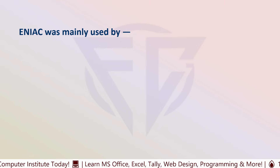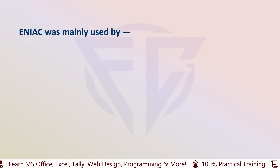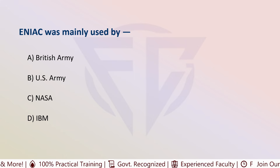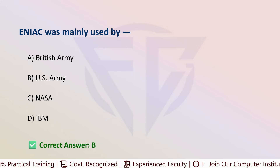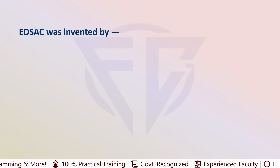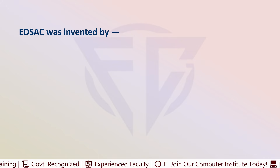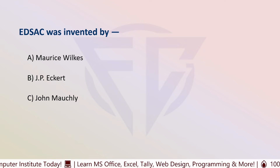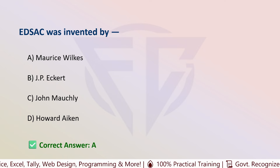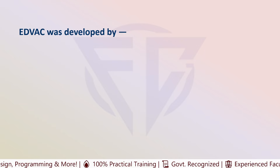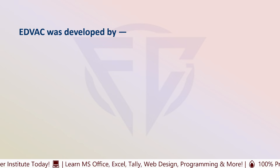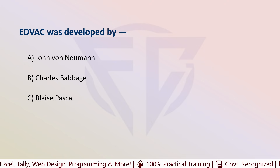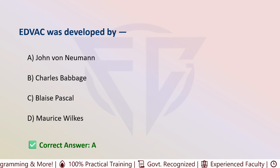The next question is: ENIAC was mainly used by — options are: A) British Army, B) US Army, C) NASA, and D) IBM. The correct answer is B, US Army. The next question: who invented ENIAC? Options are: A) John von Neumann, B) Charles Babbage, C) Blaise Pascal, and D) Maurice Wilkes. The correct answer is A, that is John von Neumann.